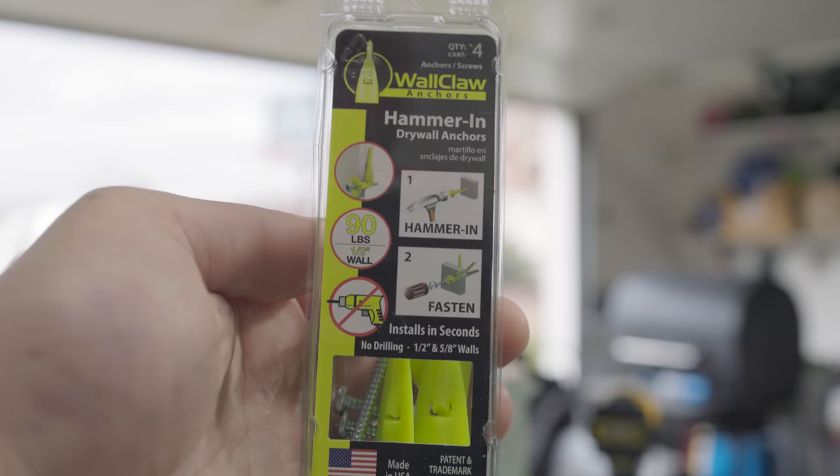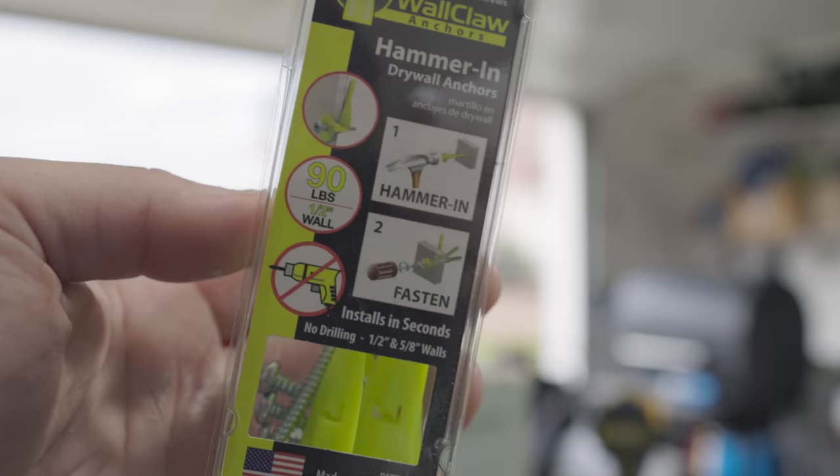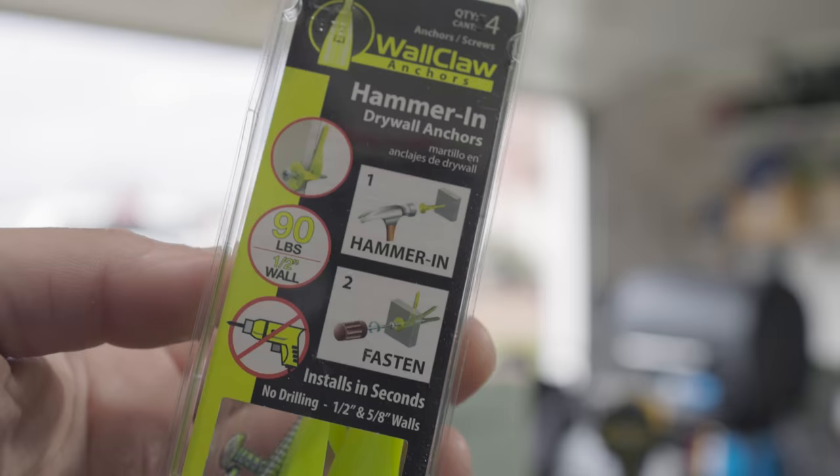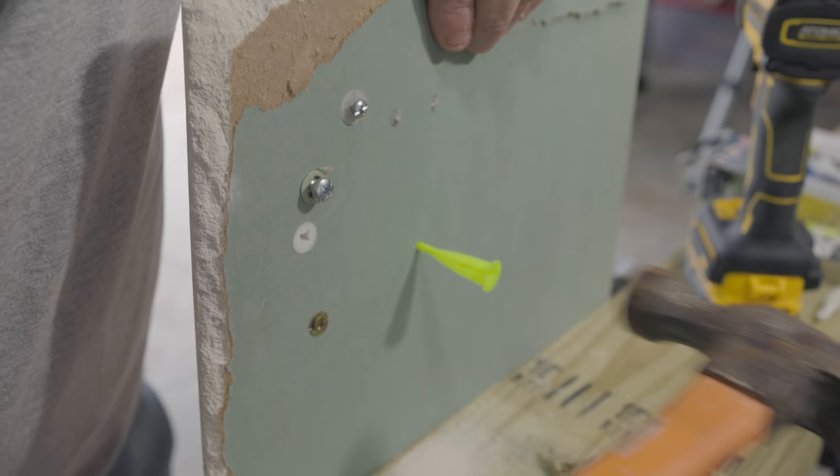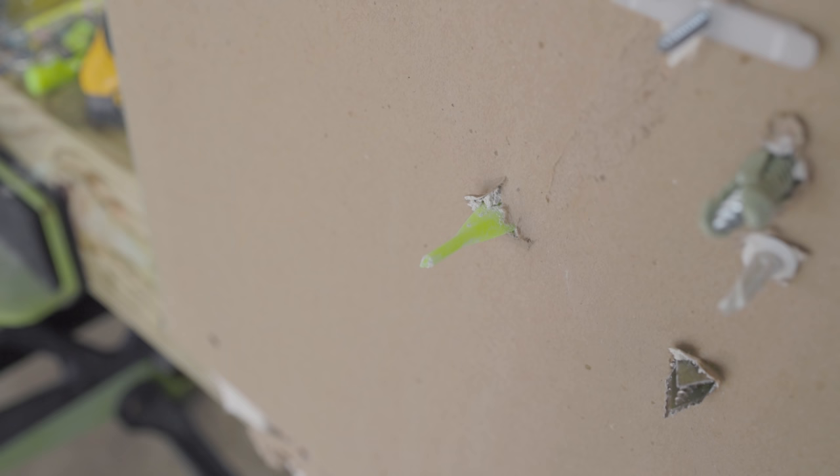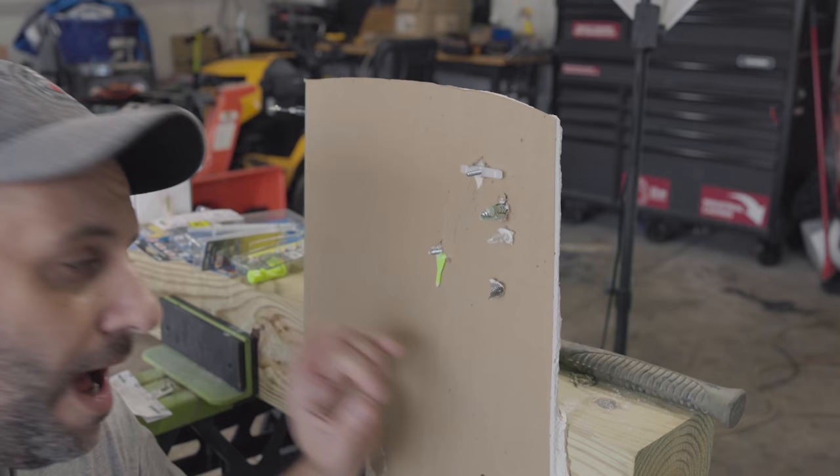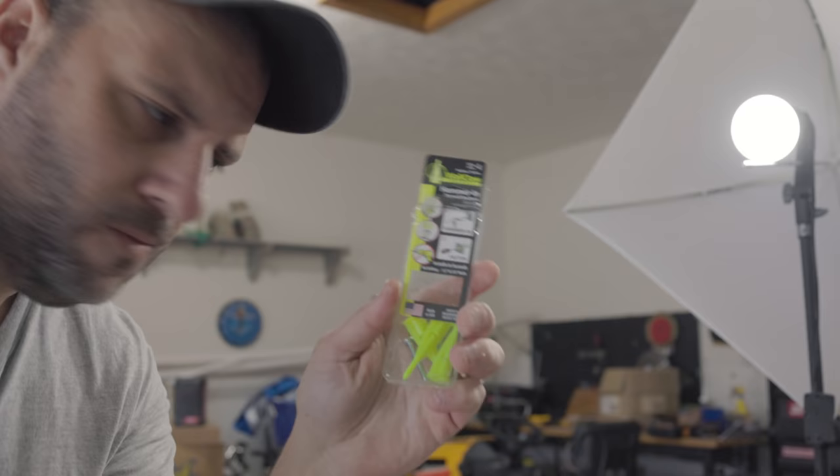So this one right here, it's called wall claw. 90 pounds and only a hammer needed. Got one of those. Well, those are extremely bright. All right. Let's see what happens when we put it in. I will admit watching that footage back, that was pretty freaking cool. Wall claw.